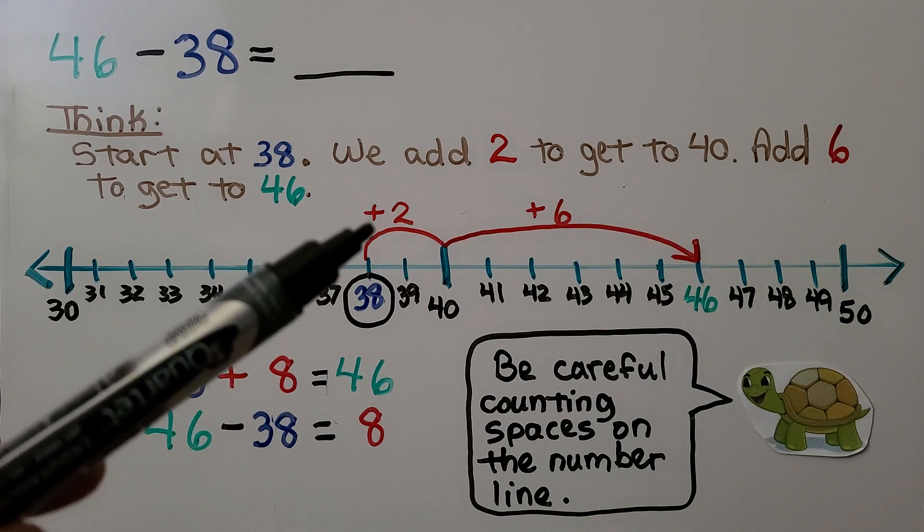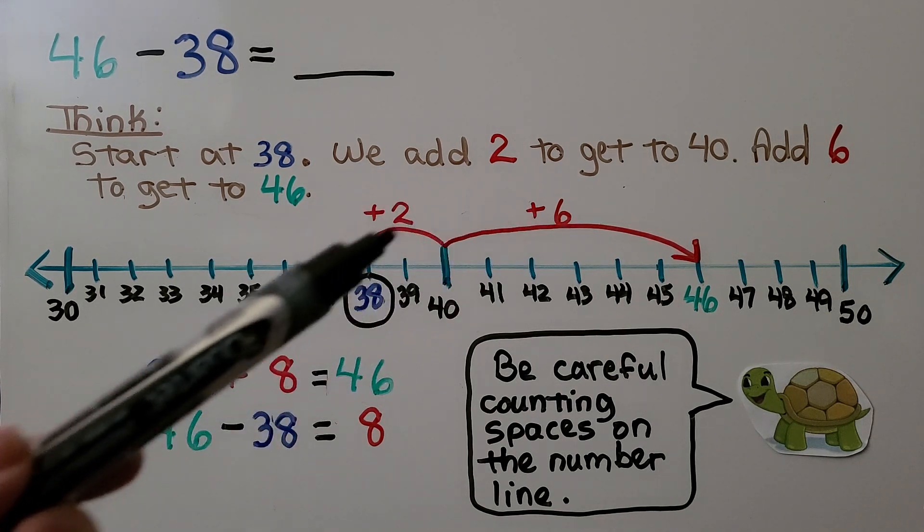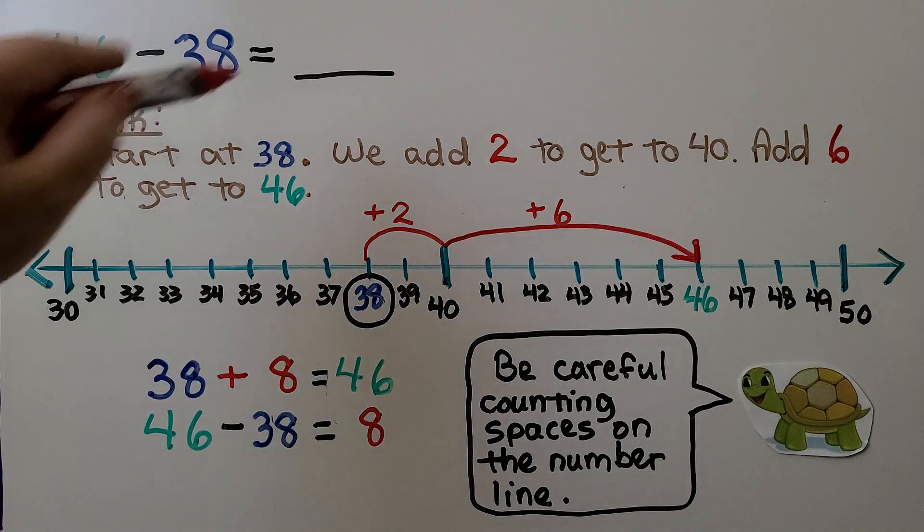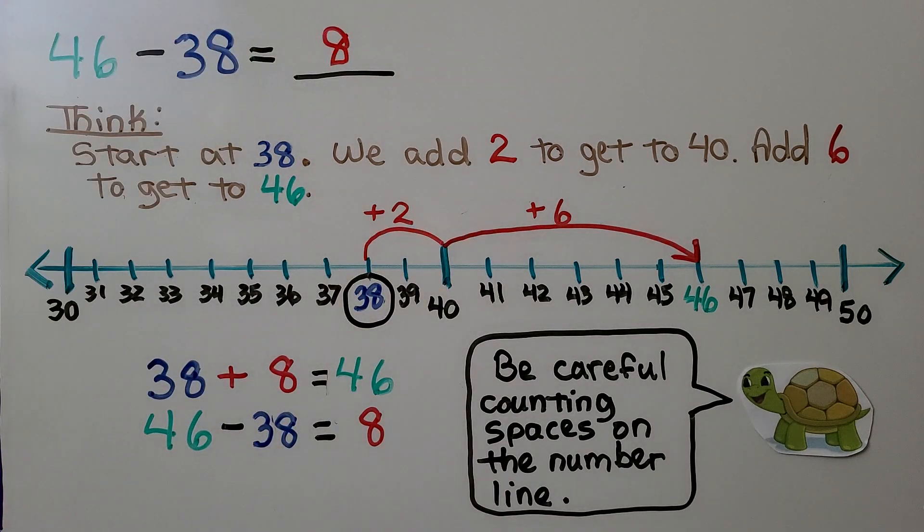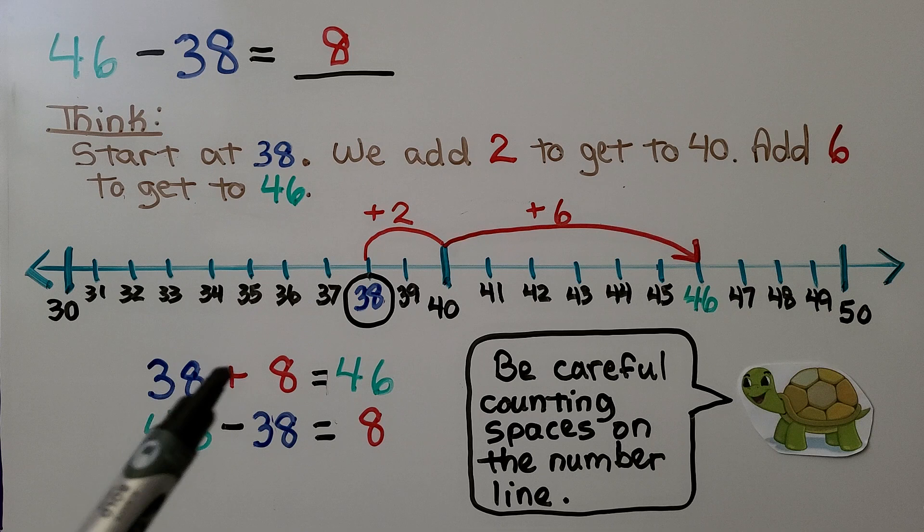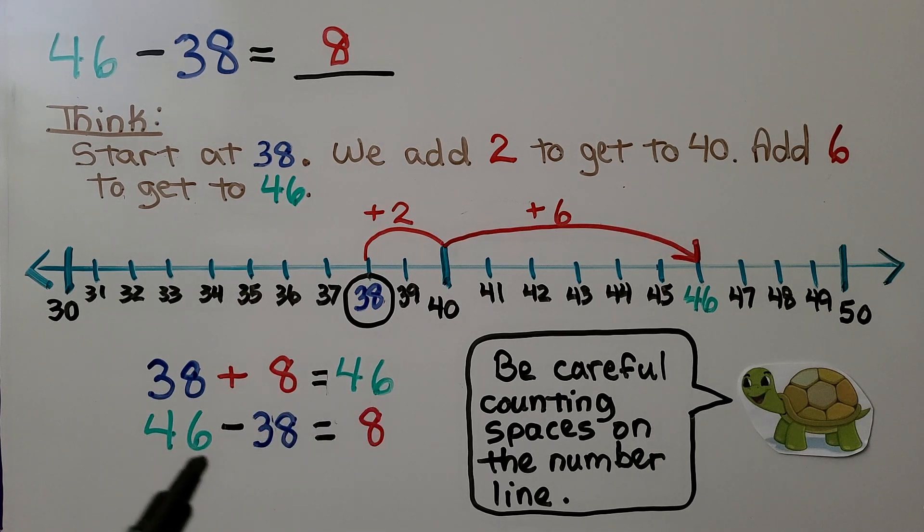We add the 2 and the 6 together. That's 8. 46 minus 38 is equal to 8. 38 plus 8 is equal to 46, and 46 minus 38 is equal to 8.